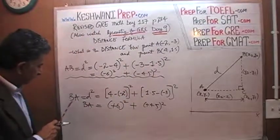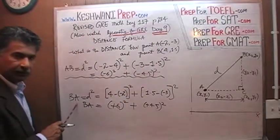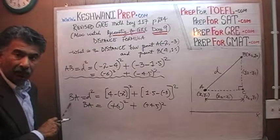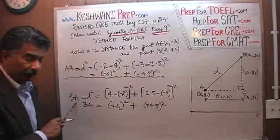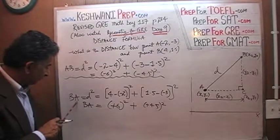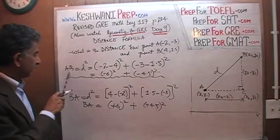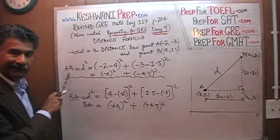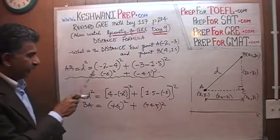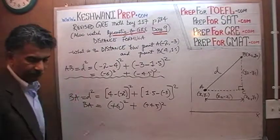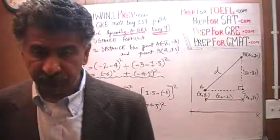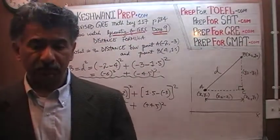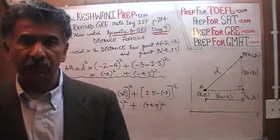In the first calculation we went from A to B, treating A as our initial point. In the second we went from B to A, treating B as the initial point. The answer of course is the same — the distance doesn't change whether you go from A to B or B to A.